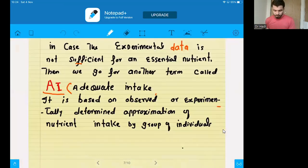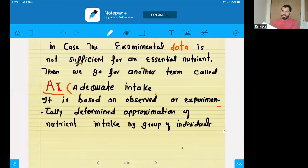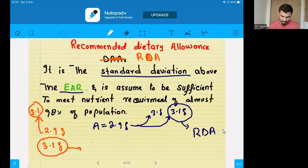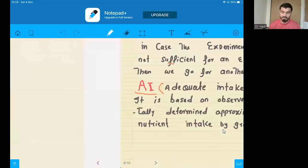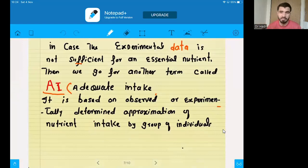Now, we have another thing that is AI. Sometimes, the experimental data is not sufficient to determine the RDA value, especially the RDA value. Sometimes, in some cases, the RDA value cannot be determined. But we need it because the nutrient is essential and we need the values. We need some value. So, what we will do in this case, we will have a substitute term, another term instead of RDA, that is AI. AI stands for adequate intake.